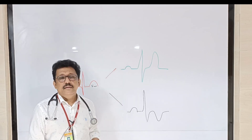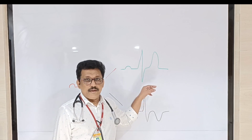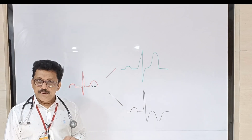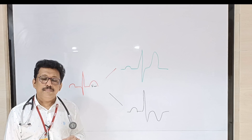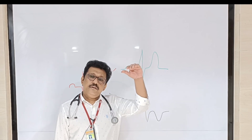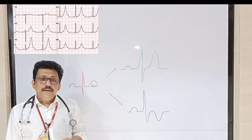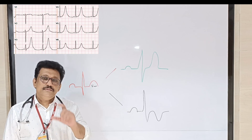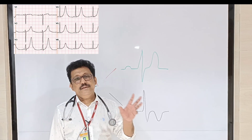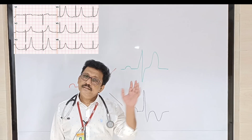Tall T waves with certain clinical features are very important. A patient who is having acute renal failure or chronic renal failure coming in with very tall, tented T waves may indicate hyperkalemia. Hyperkalemia is one of the most common causes for very tall tented T waves — very tall T waves reaching near the QRS complex. In hyperkalemia, the tall T waves are seen in almost all leads, which is the important distinguishing feature. Clinical features like renal failure and high potassium on blood investigation together with tall T waves suggest hyperkalemia.